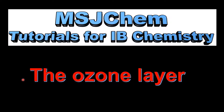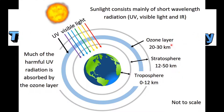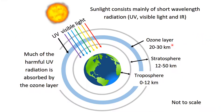This is MSJChem. In this video I'll be looking at the ozone layer. The ozone layer is located between 20 and 30 kilometers above the surface of the earth in the stratosphere. The purpose of the ozone layer is to prevent harmful UV radiation from the sun reaching the surface of the earth.